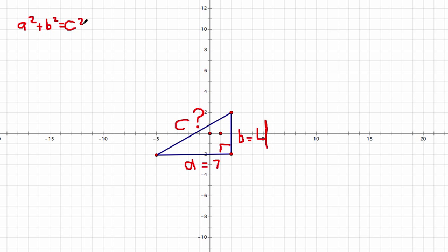Really simple, and you probably know this formula, but you never associate it with two points in the graph. So let's replace A squared with seven squared, and B squared will be replaced with four squared. And our C squared will continue to stay hidden.